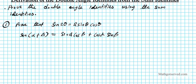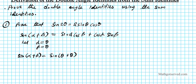So what we're going to do now is make a substitution: let alpha be equal to theta and beta be equal to theta also. We're going to make this substitution into the sum identity for sine and see what happens. So sine of alpha plus beta, after making this substitution, will become sine of theta plus theta, because we're replacing both angles with theta. On the right side it becomes sine theta cosine theta plus cosine theta sine theta.